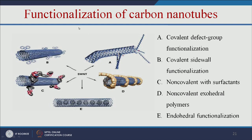There are various approaches for making functional carbon nanotubes: covalent defect group functionalization, covalent sidewall functionalization, non-covalent functionalization with surfactants, non-covalent exohedral polymer functionalization, and endohedral functionalization.